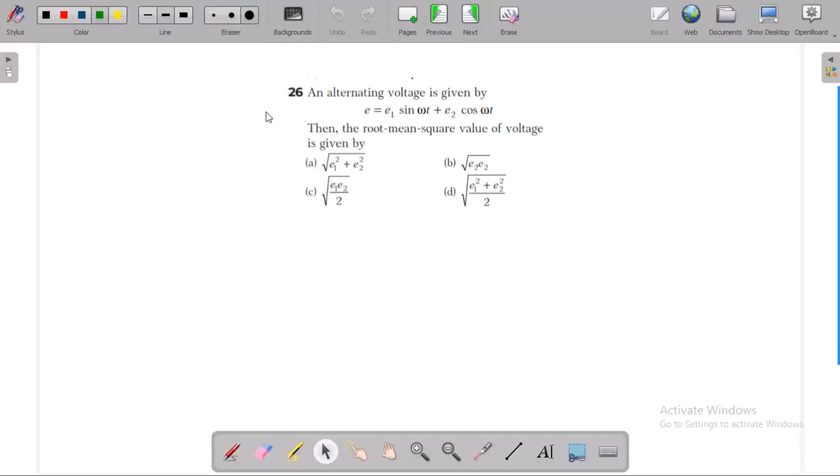An alternating voltage is given by the equation: V of T, the voltage at any time, is equal to E1 sin omega t plus E2 cos omega t.